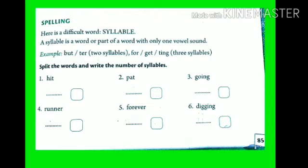Syllables, that means sabdans in Hindi. Children, a syllable is a word or part of a word with only one vowel sound. Sabdans, a word or part of a word which has a vowel sound created.